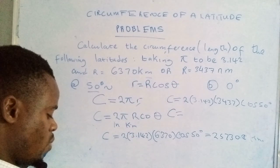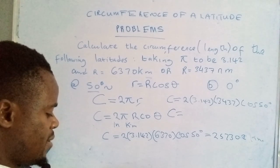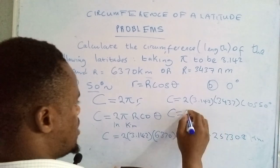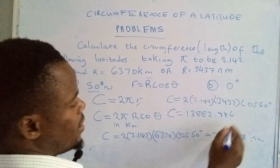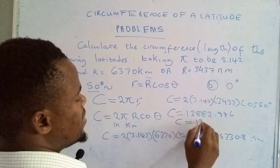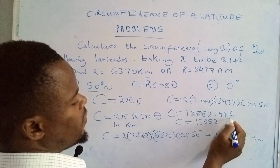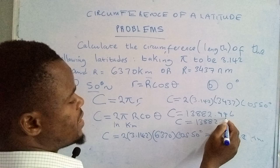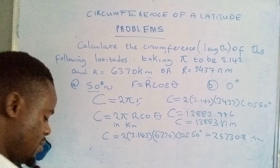So circumference will be, let's punch in that: 2 times 3.142 times 3437 cos 50. So what I've found is 13,882.996. This one would be increased, so circumference will be 13,882.9. And if we round it off to two decimal places, this would be a 10, so that would become a 3, giving us 13,883.0 nautical miles.